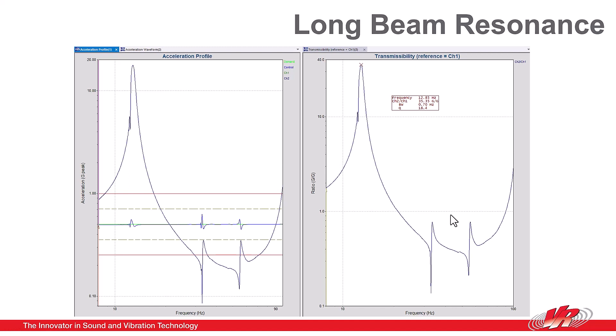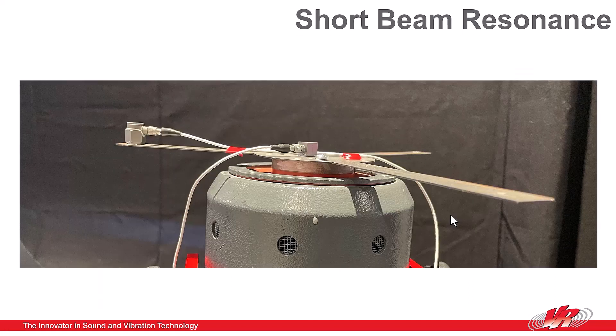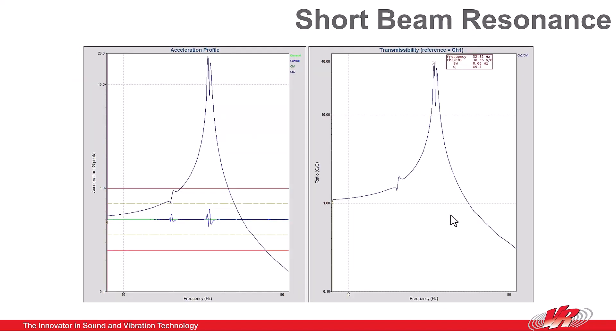So in a second test, I placed the accelerometer on the shortest beam and ran that sine sweep. And here you see the resonance of that shorter beam. And in this case, the resonance is around 32 Hz.